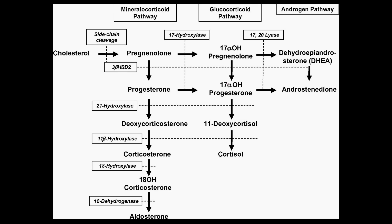There are a couple of different ways that people remember this. There are three layers to the adrenal cortex, and people remember that with the mnemonic GFR — similar to glomerular filtration rate. So you're dealing with GFR in the kidneys, of course, and another way to remember it is with GFR in the adrenal cortex. The G stands for zona glomerulosa, which is the outermost layer, and that's where aldosterone is produced. The F stands for zona fasciculata, which is where cortisol is produced. And the R stands for zona reticularis, which is where the sex steroids are produced.